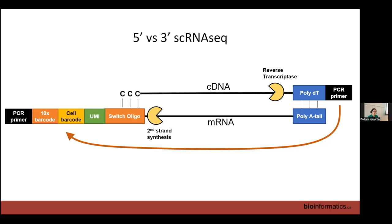It is possible that after fragmentation, read 2 will just be poly-A tail with no gene sequence. This can happen if you have a particularly long poly-A tail, though it's fairly unlikely. It can also happen if your sample is really badly degraded — then your transcripts are very short and you'll get lots of poly-T in your read 2s.